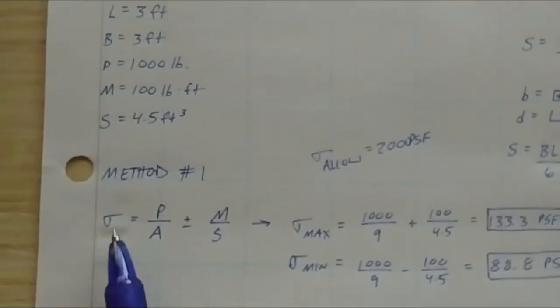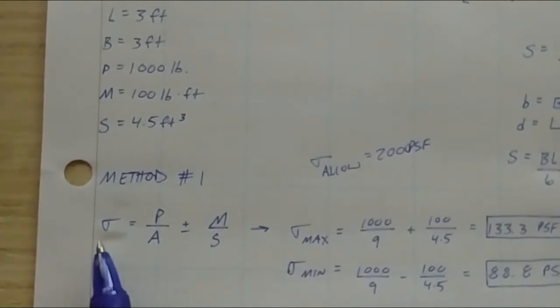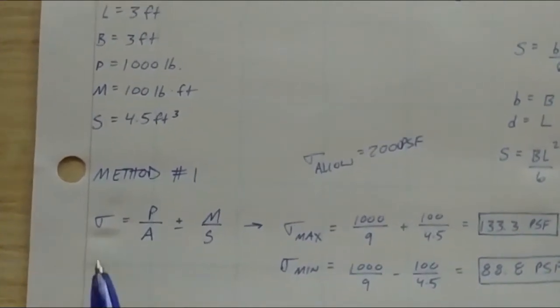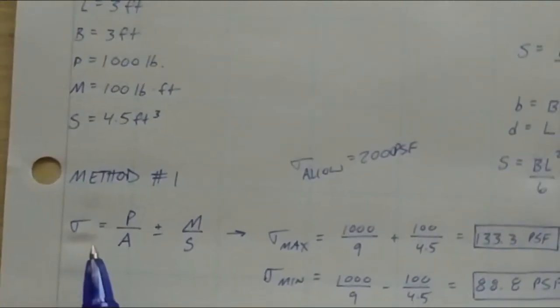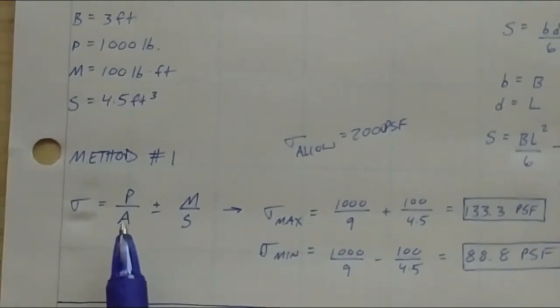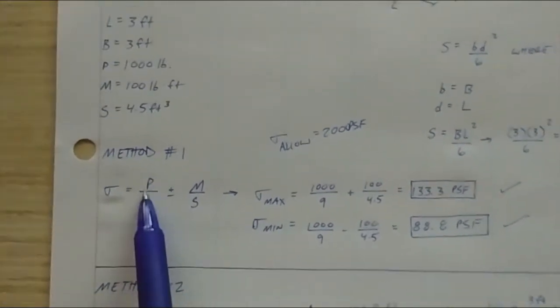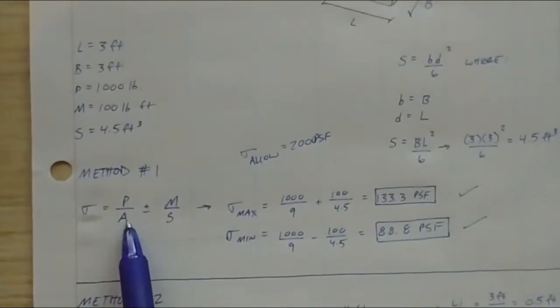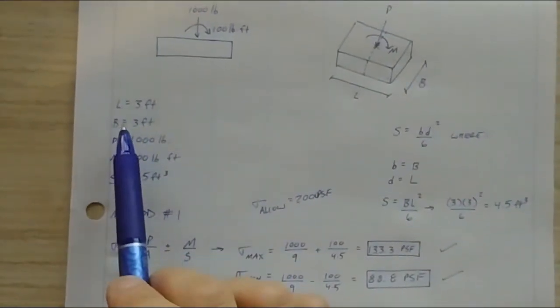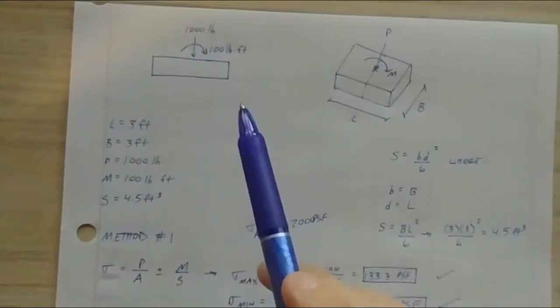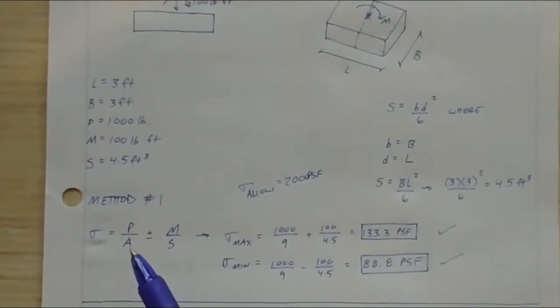And obviously you don't want that. So that's why we do this. That is what we were designing for. And that's what we're checking for is to make sure that our stresses are within and under that allowable stress. All right. So method one stress, which we know is force over an area. So pounds per square foot, or PSI pounds per square inch, yada, yada, yada. So for this, we have two components. You have your static downward component, which is your P of a thousand pounds over your A, which is just the area of your footing, which is just L times B. So three times three is nine.